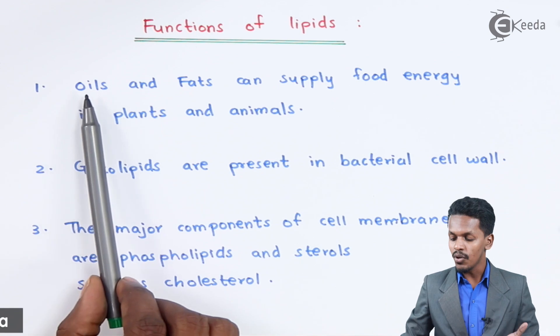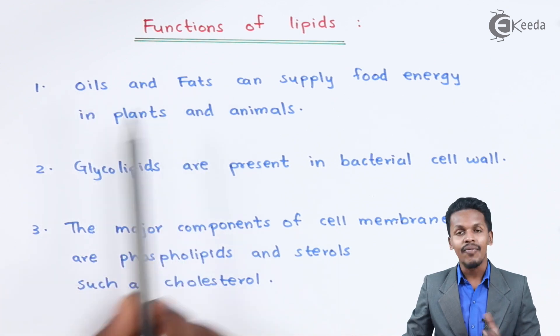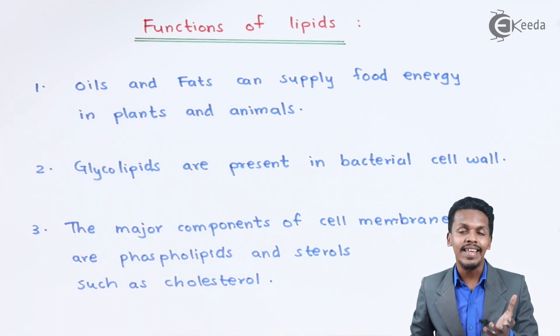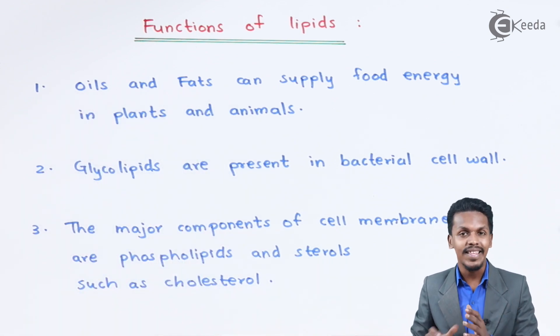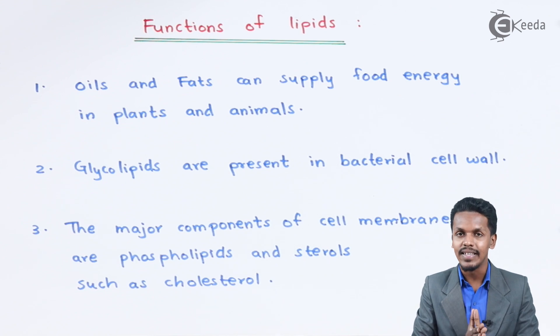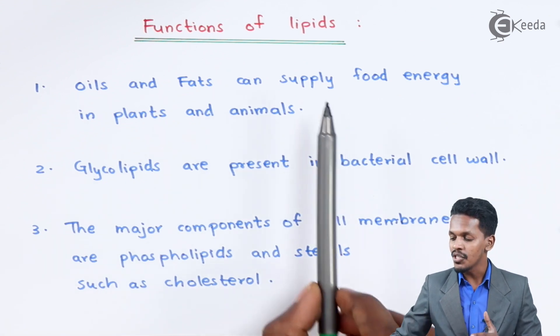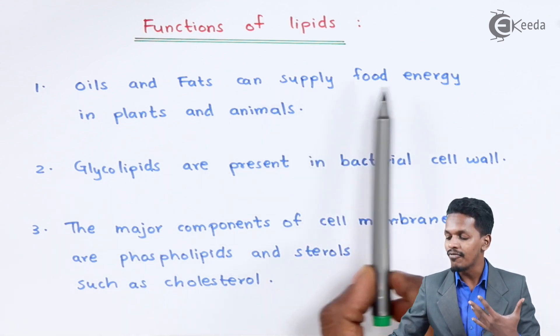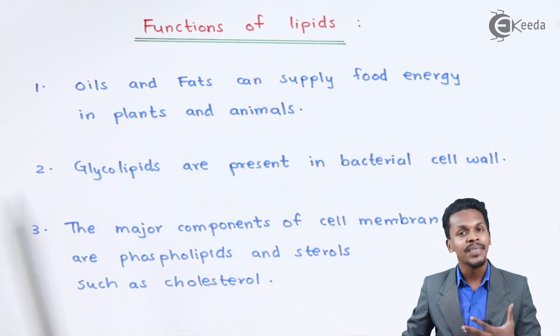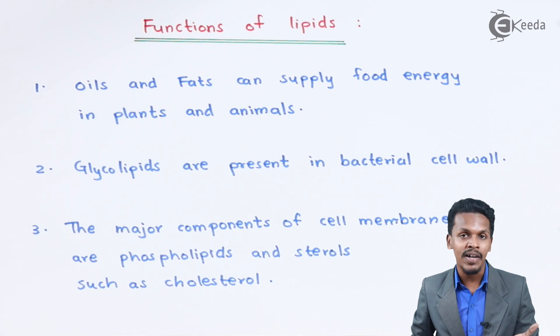When talking about oils and fats, they both consist of the ester form of fatty acids. The main function is to supply food energy not only in plants but also in animals.